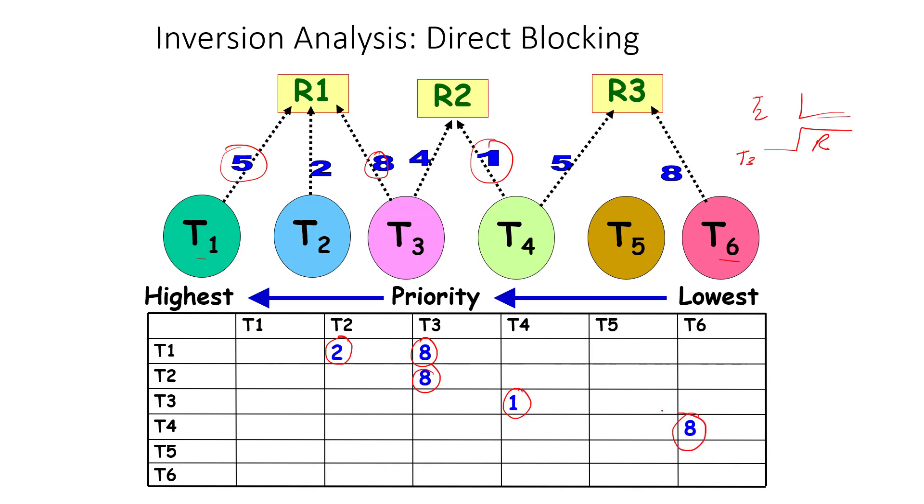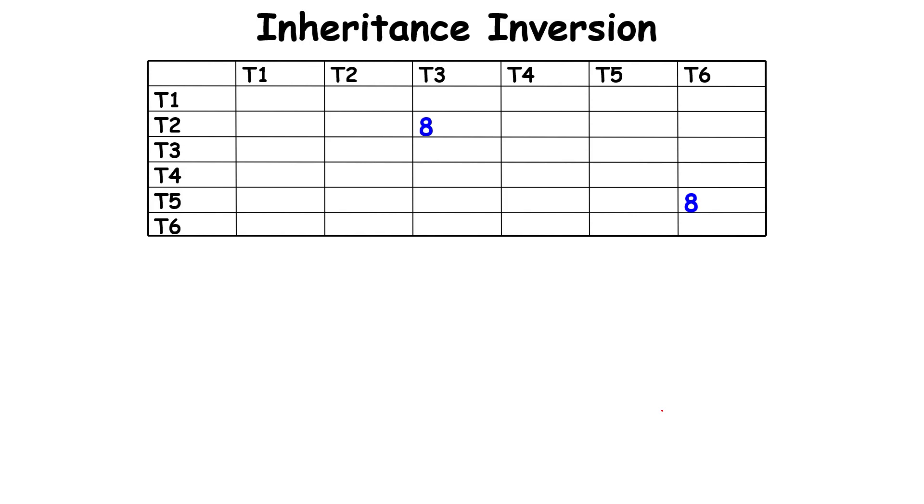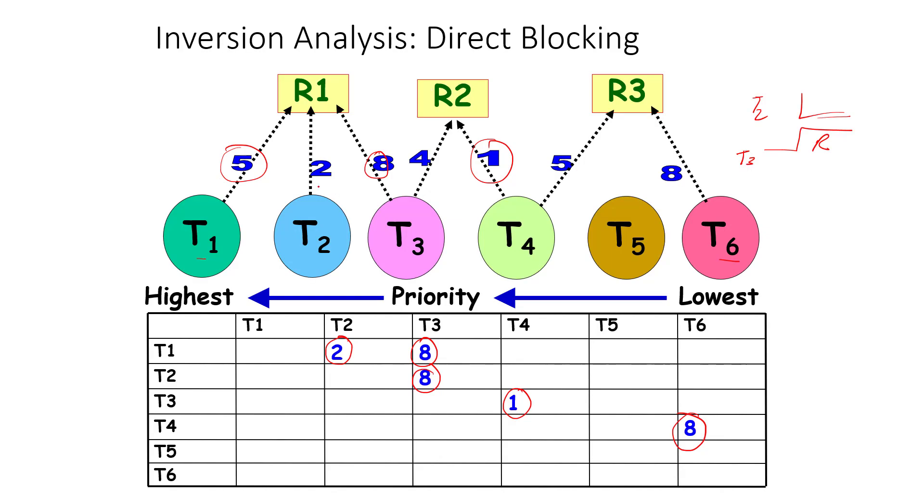You can have inheritance related inversion. Let us try to explain this number. T2 gets blocked because of T3 for eight time units. So what can happen? Assume T3 has acquired the resource, T1 comes in.